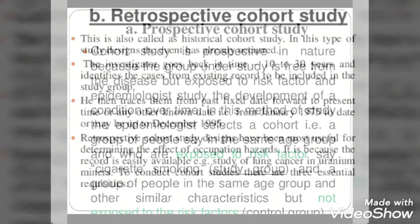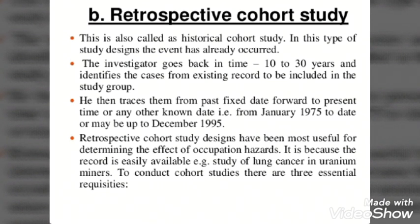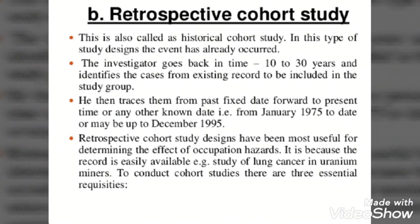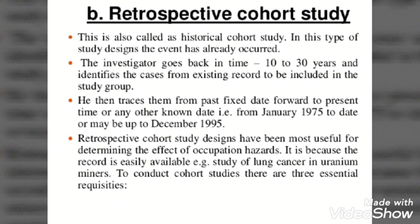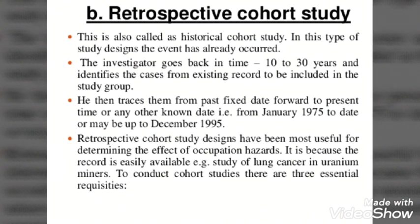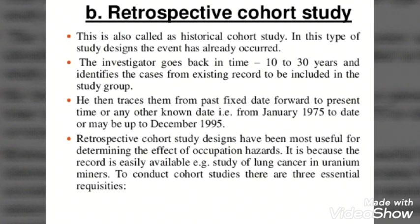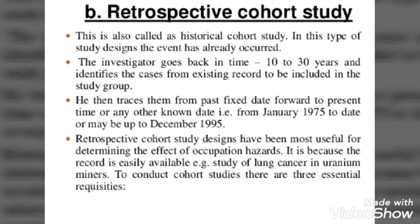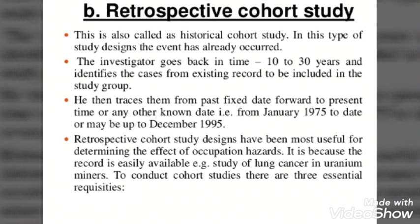Retrospective study is also called a historical cohort study. In this design, the event has already occurred. The investigator goes back in time — 10 to 30 years — and identifies cases from existing records to include in the study group. The epidemiologist examines past occurrences to help solve present cases.